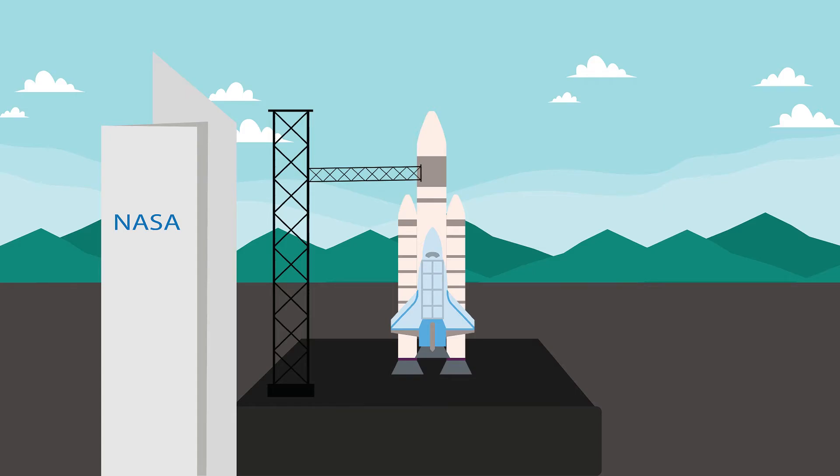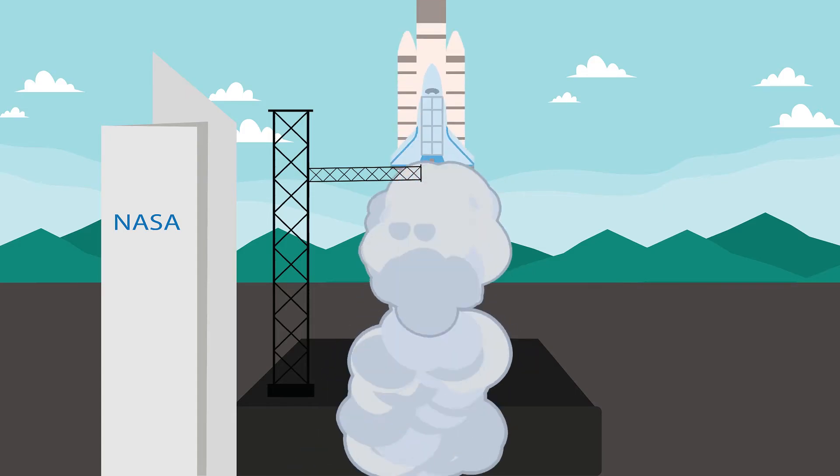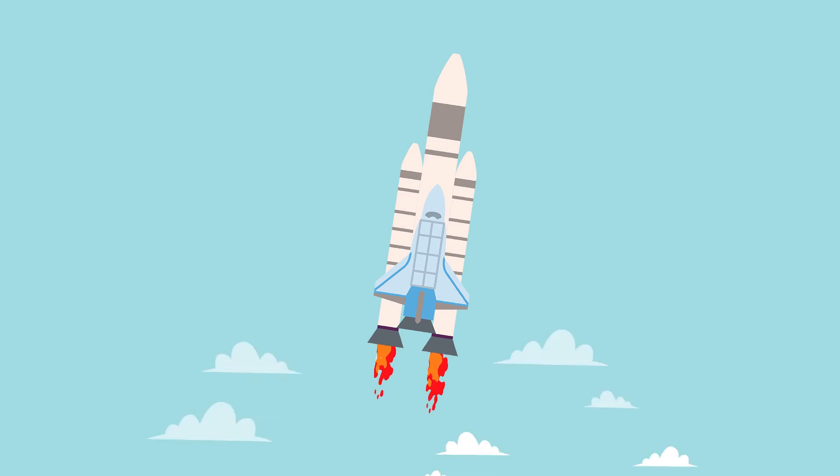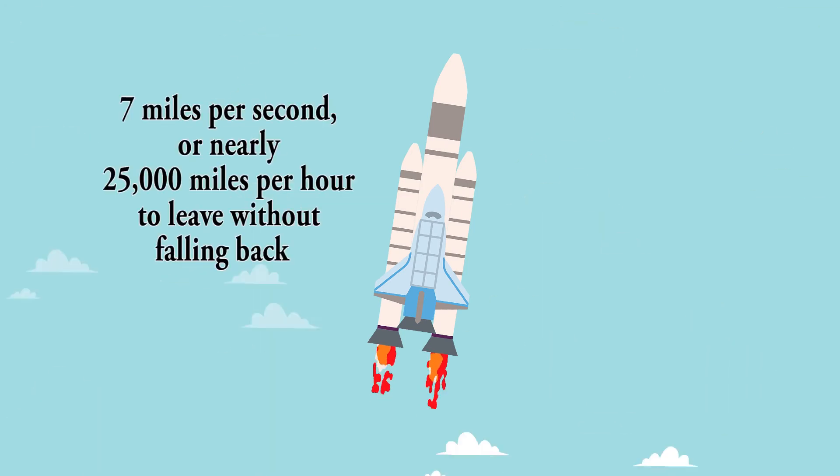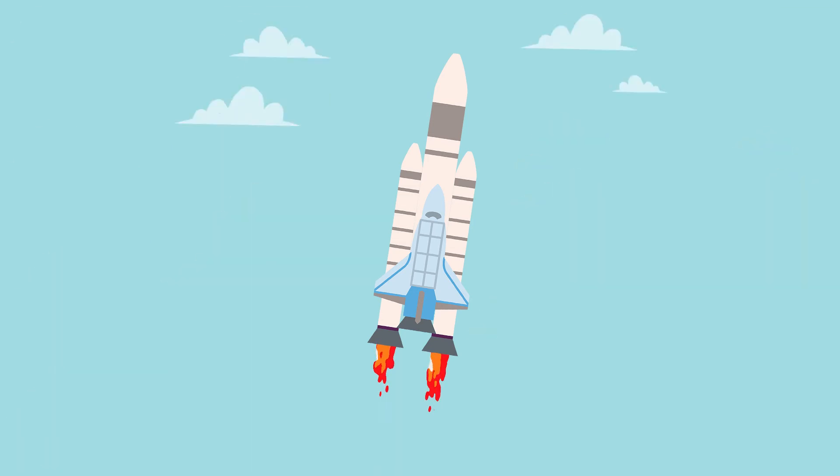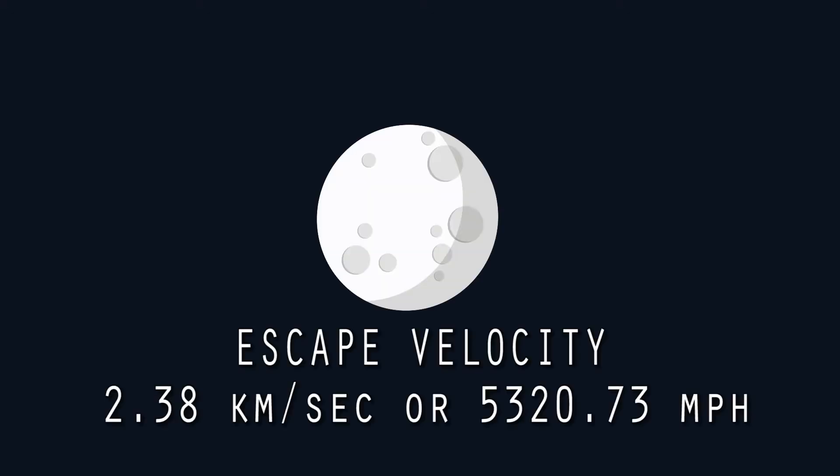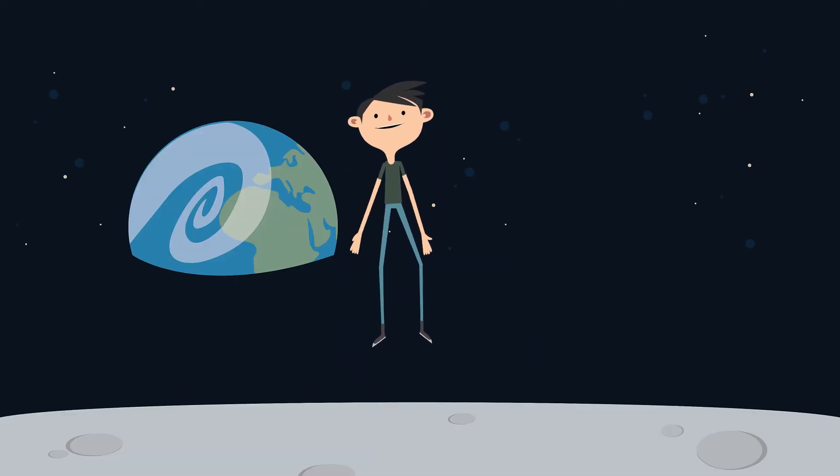Or nearly twenty-five thousand miles per hour to leave without falling back to the surface. Our moon's escape velocity is 2.38 kilometers per second, or 5,320.73 miles per hour. So it's impossible to achieve that in a jump.